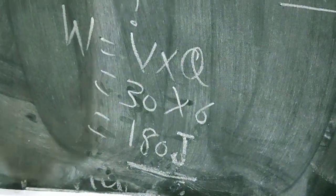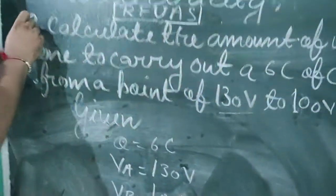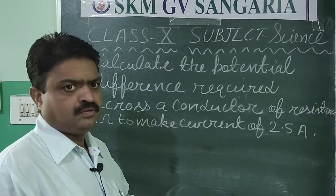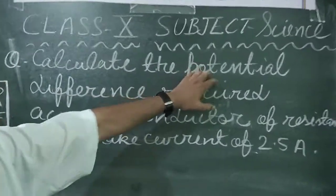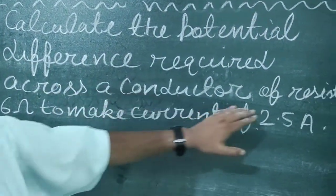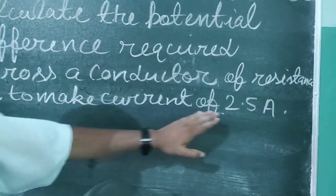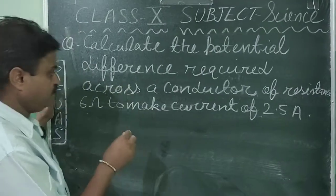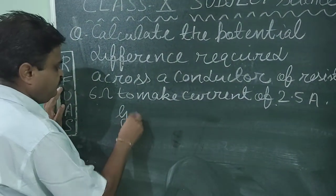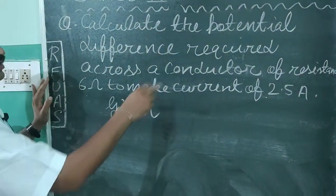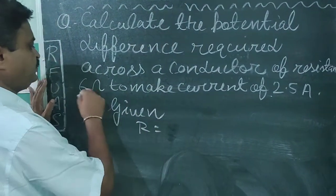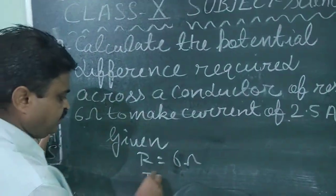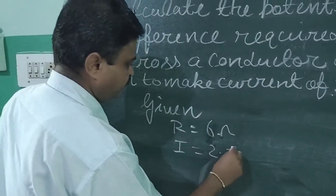That was the solving of the first numerical. Now we will solve the next question using the same trick. The question is: Calculate the potential difference required across a conductor of resistance 6 ohm to make a current of 2.5 ampere flow. According to the trick, we read the question and find the given quantities: resistance R = 6 ohm, and current I = 2.5 ampere.